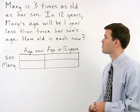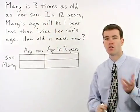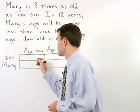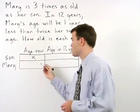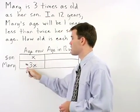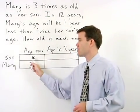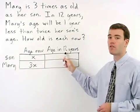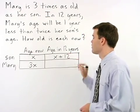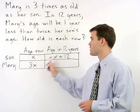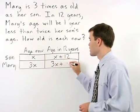Let's take a look at the first sentence in our problem: Mary is three times as old as her son. So if we use x to represent the son's age now, we can use 3x to represent Mary's age now. If the son's age now is x, his age in twelve years is going to be x plus twelve. Mary's age in twelve years will then be 3x plus twelve.